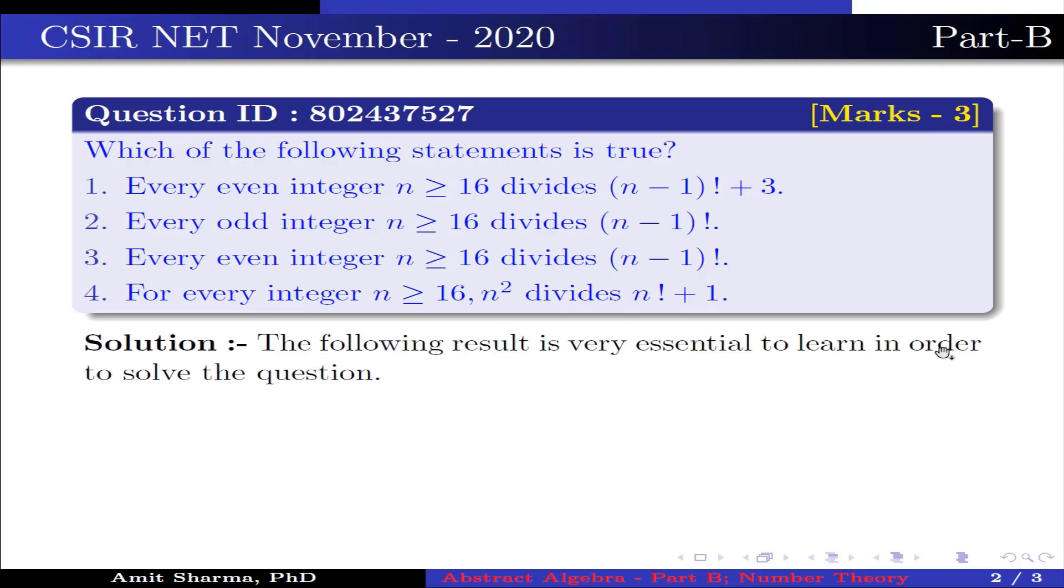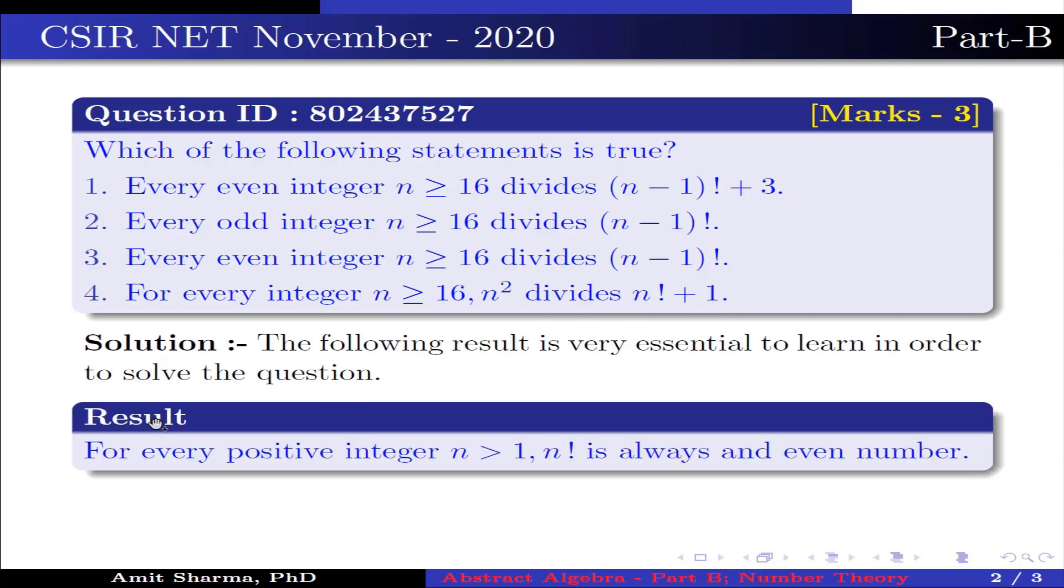The following result is very essential to learn in order to solve the question. Result: for every positive integer n greater than 1, n! is always an even number.